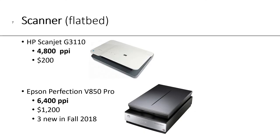In both of our Mac labs upstairs, we have flatbed scanners. We have an older HP ScanJet G3110 with a resolution of 4,800 pixels per inch; those scanners cost about $200. We also have Epson Perfection V850 Pros at 6,400 pixels per inch, which cost about $1,200 when we bought three of those new in fall of 2018.